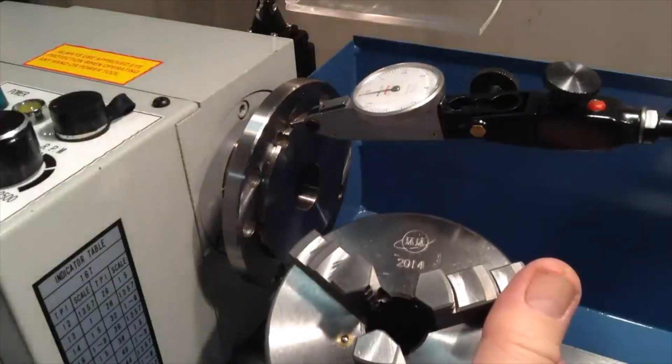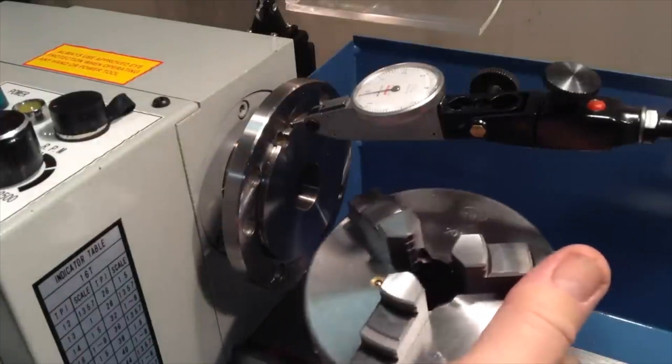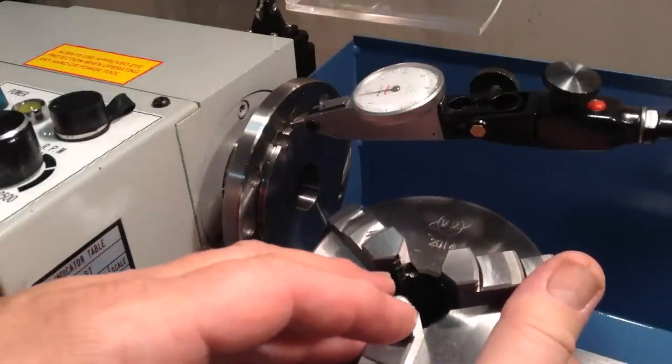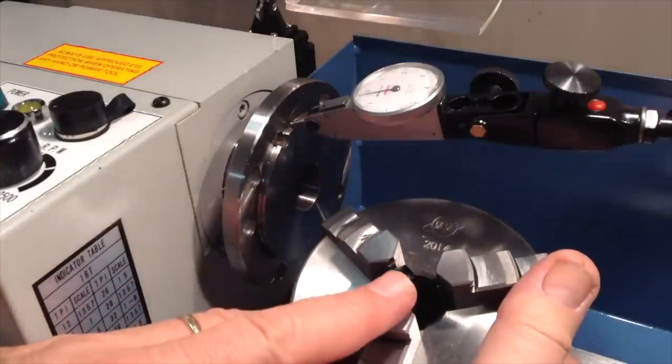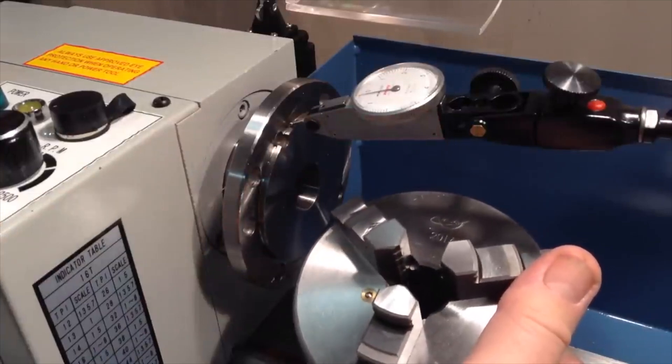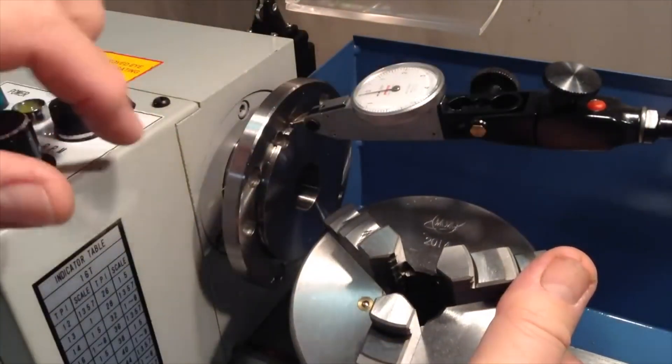Now the other thing is even if your chuck was off by say five thousandths, which would be quite a lot even for an inexpensive chuck, the workpiece as soon as you start turning it is going to be as concentric as your spindle itself.